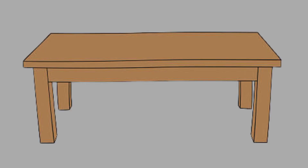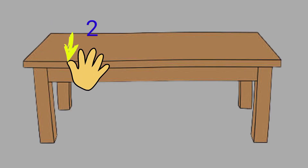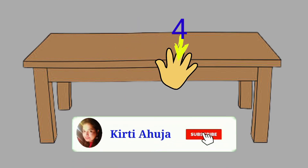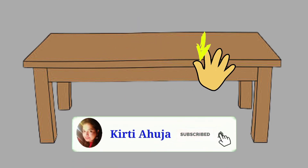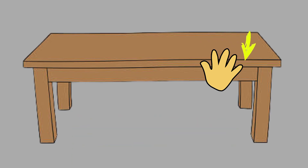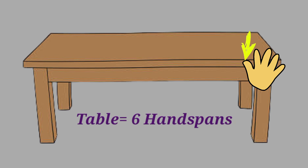Let's measure this table: 1, 2, 3, 4, 5, and 6. We can say that this table is 6 handspans long.